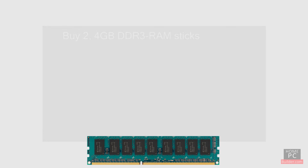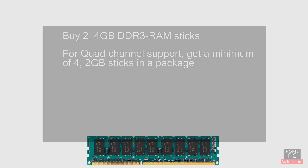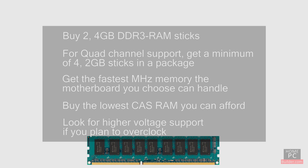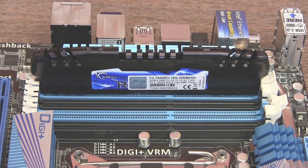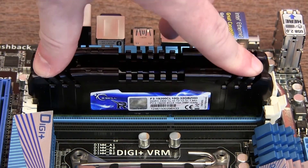When you purchase your computer's memory, look for two 4GB, as a minimum, DDR3 sticks in a package to enable dual-channel on the motherboard. If the motherboard you're using supports quad-channel memory, get a minimum of four 2GB DDR3 sticks in a package. Get the fastest MHz memory the motherboard you choose can handle, buy the lowest CAS RAM you can afford, and look for higher voltage support if you plan to overclock the RAM. In the installation lessons, we'll go over how to install the memory sticks onto the motherboard.